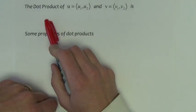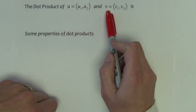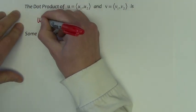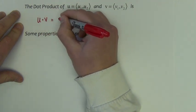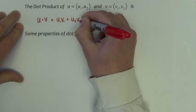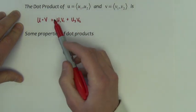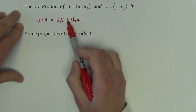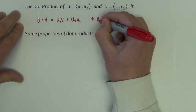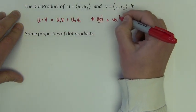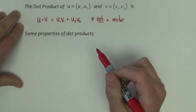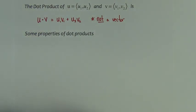So first let's look at the dot product of two vectors. We have a vector u = (u1, u2) and v = (v1, v2). The dot product u·v is equal to u1v1 plus u2v2. So it's the product of the x's plus the product of the y's. It's important to note that this is not a vector, it's just a number. The dot product of two vectors is simply a number.